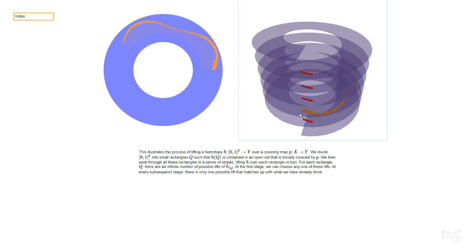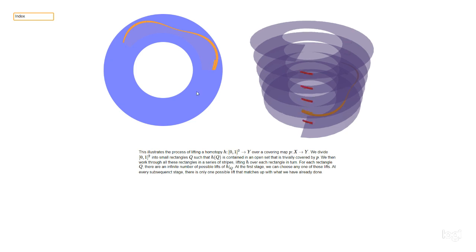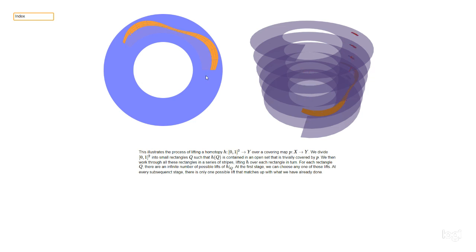Then we move on to the next stage, which is slightly more complicated. We pick a patch that matches correctly at the junction point, but we need a separate argument to show it matches up all the way along two different joints. That's a small but necessary step in the formal proof. As we carry on, each new patch has to join up along two different edges with what we've already done.